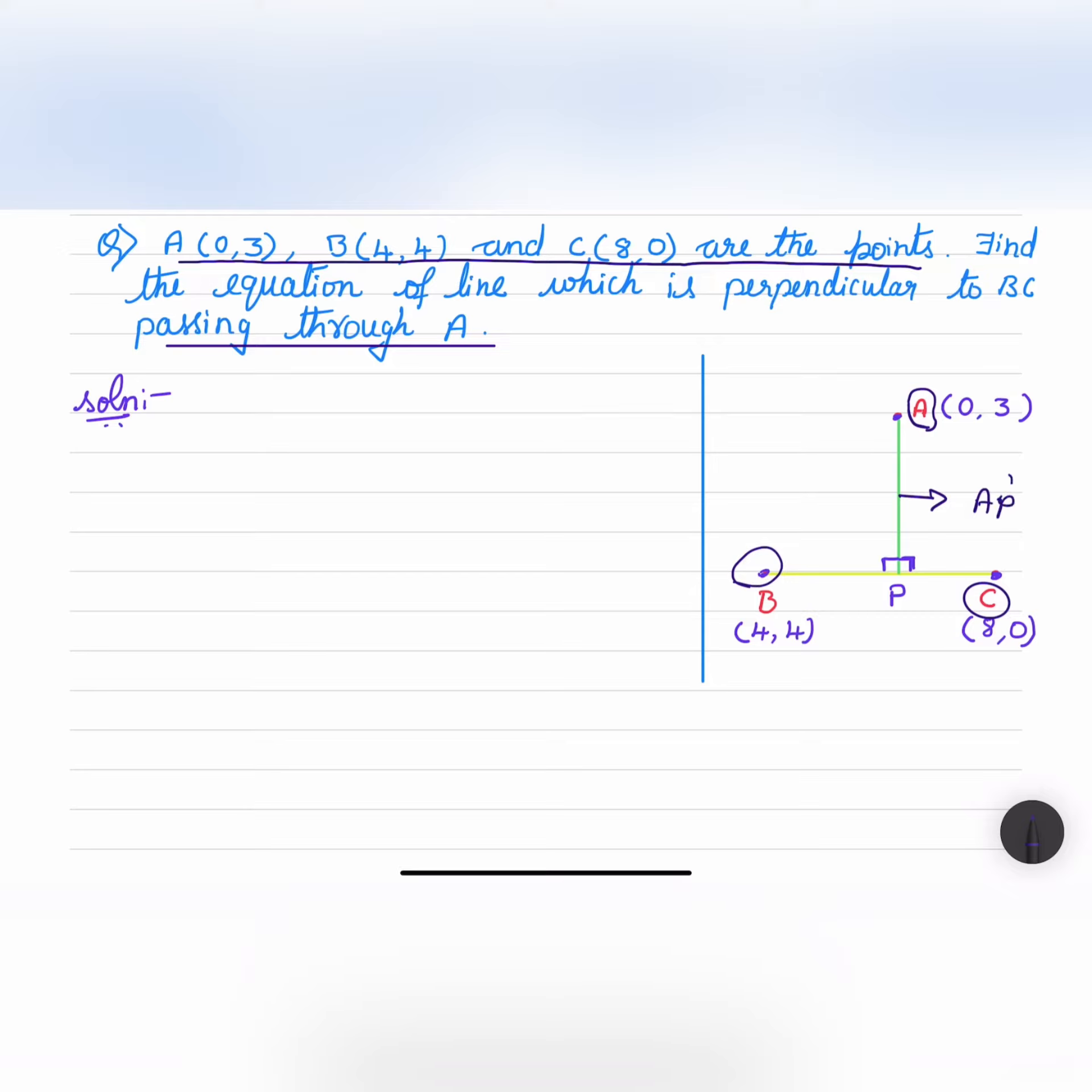This AP's equation we need to find out. And when the lines are perpendicular then we know that the slopes M1 into M2 is equal to minus 1. And we will find out M1 first. M1 I will take the slope of BC, M2 will take the slope of AP.